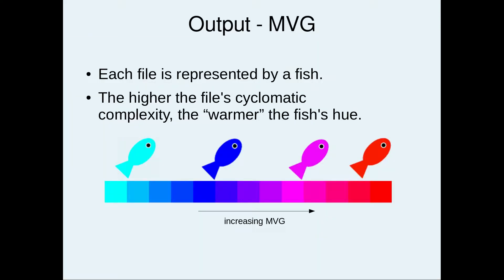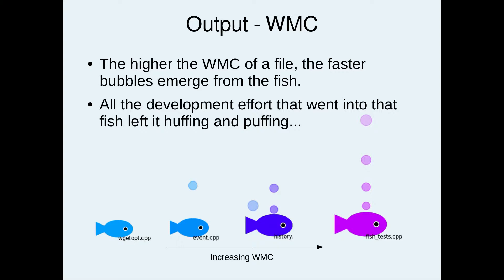Our metrics are interpreted as follows. Each file is represented by a fish. The higher the file's Cyclomatic Complexity, the warmer its hue. The higher the WMC of a file, the faster bubbles emerge from the fish.